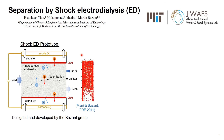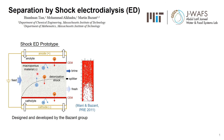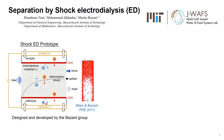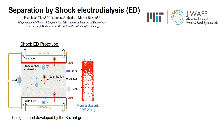This is a schematic of the current shock ED prototype. The main component is a weakly negatively charged macroporous material, sandwiched between two cation exchange membranes. When current is applied to the system, the anions tend to go from the cathode to the anode but get blocked by the membranes, while cations can move freely across the membranes. When the current is higher than the diffusion limiting current, a deionization shock can propagate from the cathode side to the anode side, leaving behind a deionization zone.